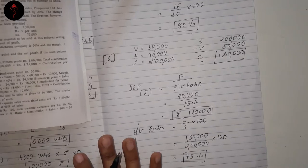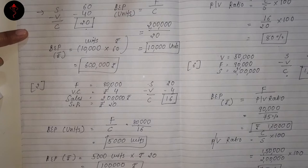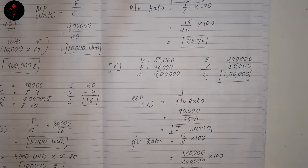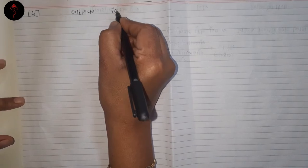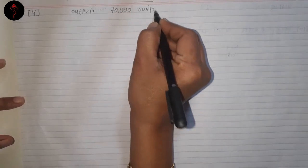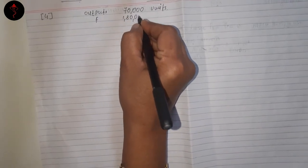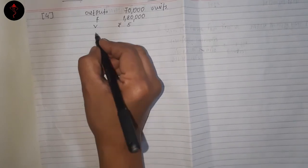So these three sums we have done: in the first, BEP was found without rupees; in the second, BEP in rupees was found two ways — by multiplying units and by formula; in sum number 6, only BEP in rupees could be found. Now let's do sum number 4, on page number 300. The following information is given: output 70,000 units.